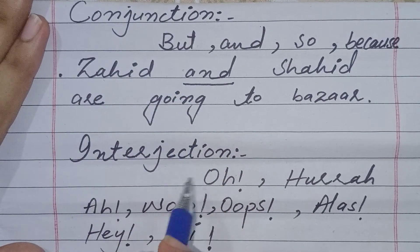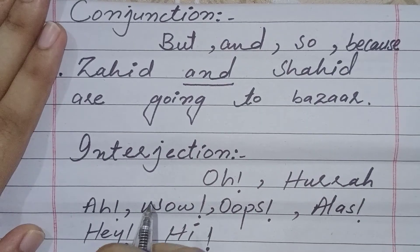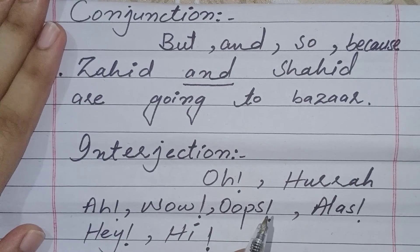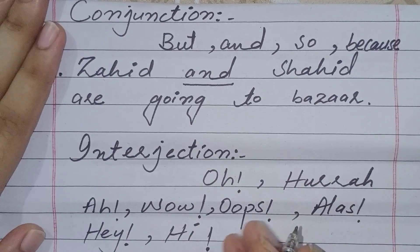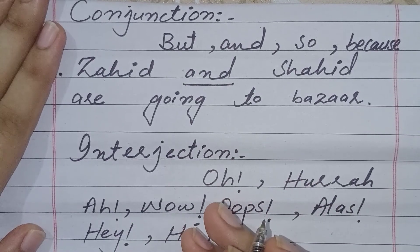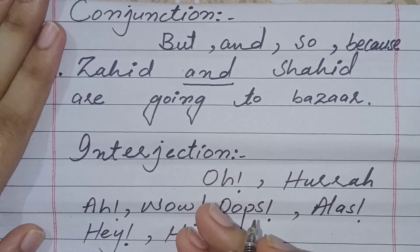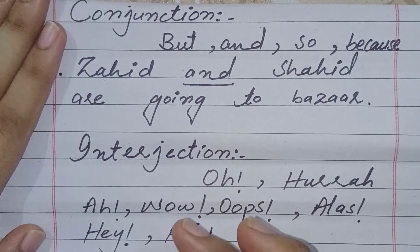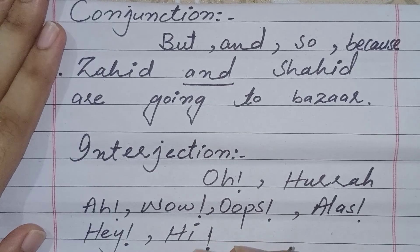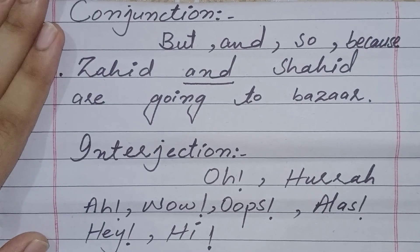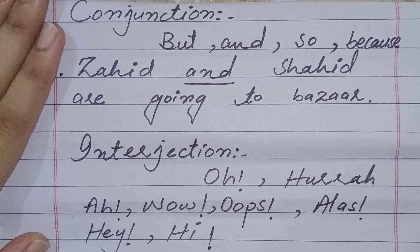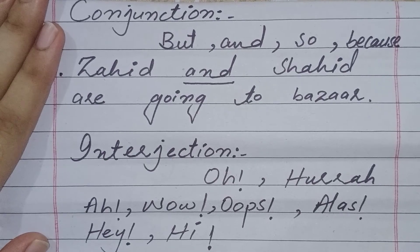Now we move to the last part of speech: interjection. An interjection is a word that expresses some sudden feeling or emotion. These are specific words we use to express feelings and emotions — they don't have a fixed grammatical meaning but show sudden feeling in a sentence. Examples include: oh, hooray, ah, wow, okay — such words are called interjections.